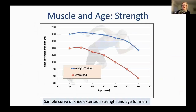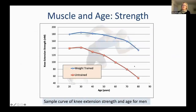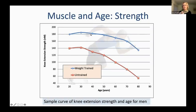You see a similar relationship with muscle strength as with cardiovascular fitness. Without resistance training, you are less strong to begin with, fall more rapidly, and end up in a critical range of function. If you train regularly throughout your life, you start stronger, the decline is less steep, and you retain a great deal of functional capacity in your later years. This is a summary of literature data — not from one particular study, but representative of the research.